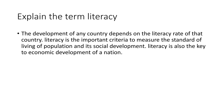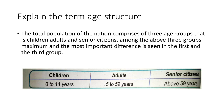Now, explain the term age structure. The total population of a nation comprises three age groups: children, adults, and senior citizens. Among these three groups, the most important difference is seen in the first and third groups. You will also need to include the table which is already given in the book, so copy that from there.